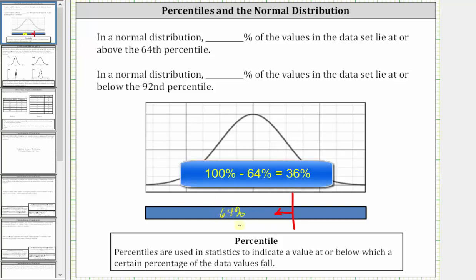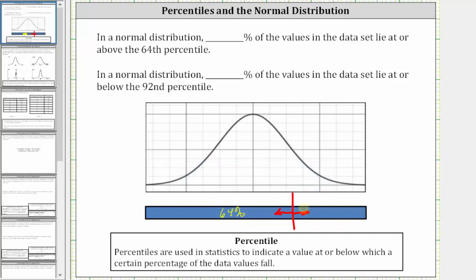Which means 100% minus 64% or 36% of the data must lie at or above this data value or 64th percentile.